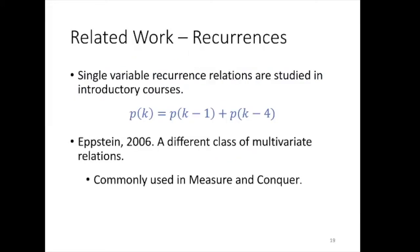For recurrences in a single variable, there is a fairly simple solution studied in introductory courses on parameterized complexity. The only similar work we found is a work by Eption from 2006, which considered a different class of recurrences with multiple variables. That result by Eption is widely used in measure-and-conquer algorithms.